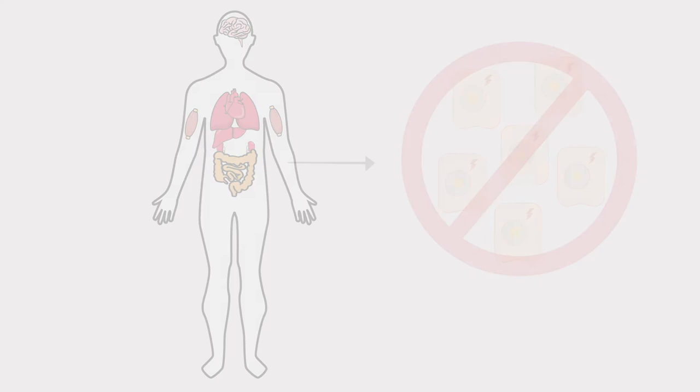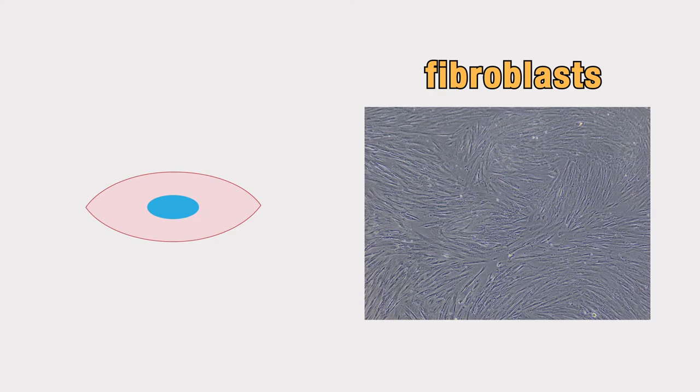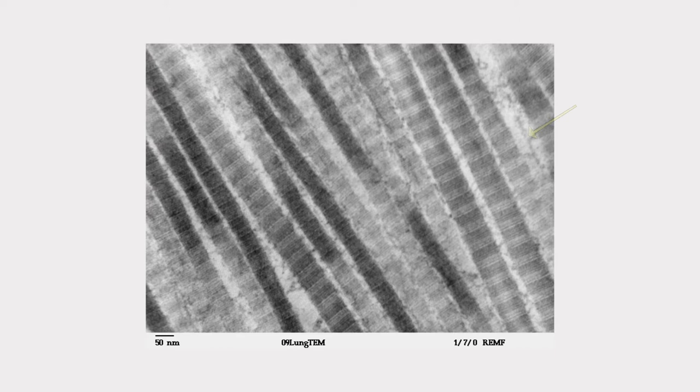Many researchers use fibroblasts as a cell model in different experiments. These cells are found all across the body, and their main job is to produce collagen, which helps form the structure of our organs and tissues. These cells are commonly used in experiments with senescent cells because they are easy to grow and manipulate in a laboratory setting, and they are found all over the body.